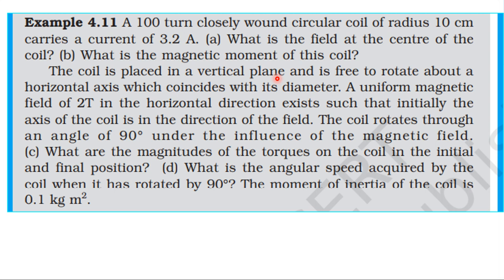The coil is placed in a vertical plane and is free to rotate about a horizontal axis which coincides with its diameter. A uniform magnetic field of 2 Tesla in the horizontal direction exists such that initially the axis of the coil is in the direction of the field. The coil rotates through an angle of 90 degrees under the influence of the magnetic field. What are the magnitudes of torque acting on the coil in the initial and final positions? What is the angular speed acquired by the coil when it has rotated by 90 degrees? Moment of inertia is 0.1 kg·m².